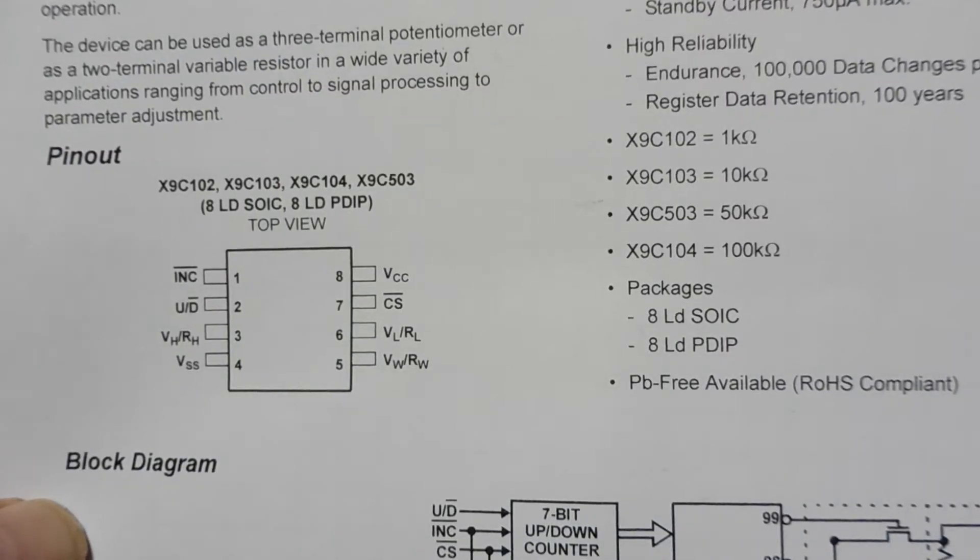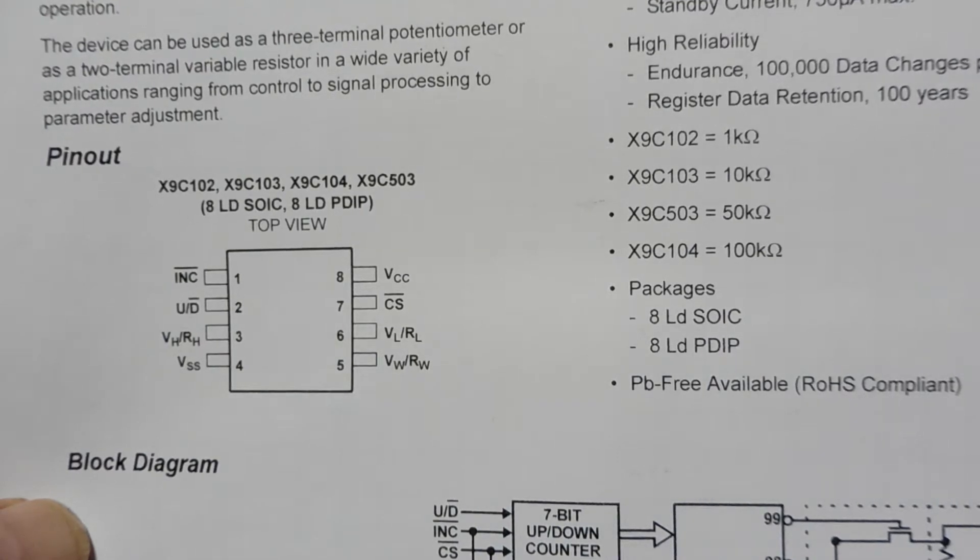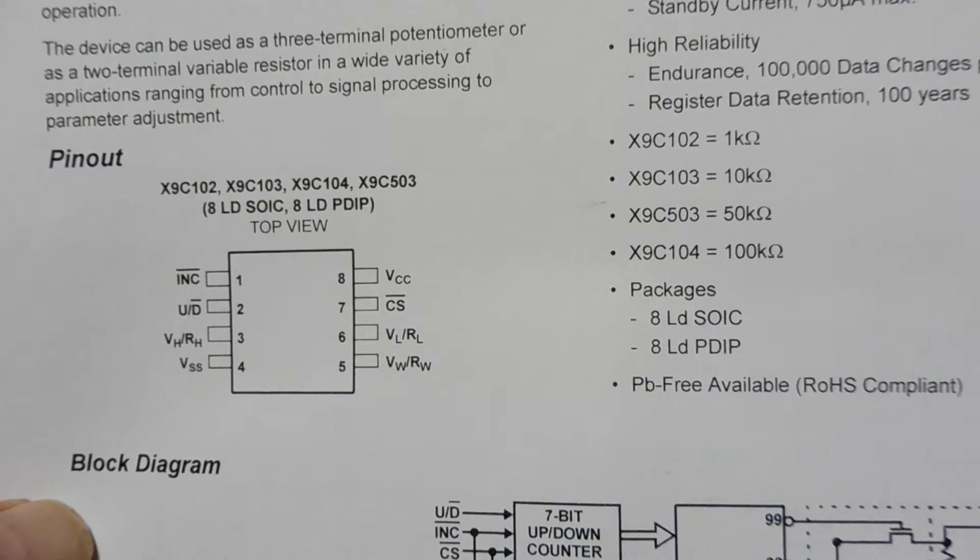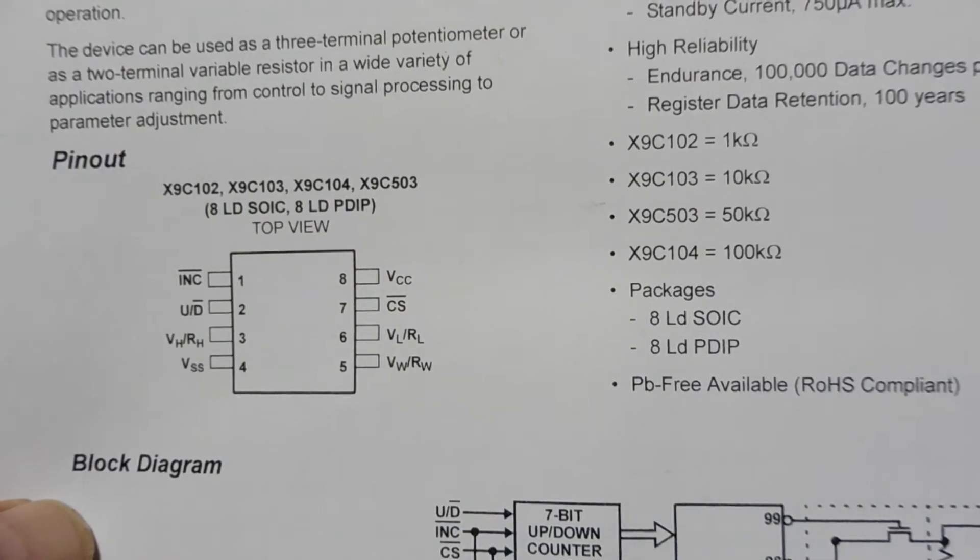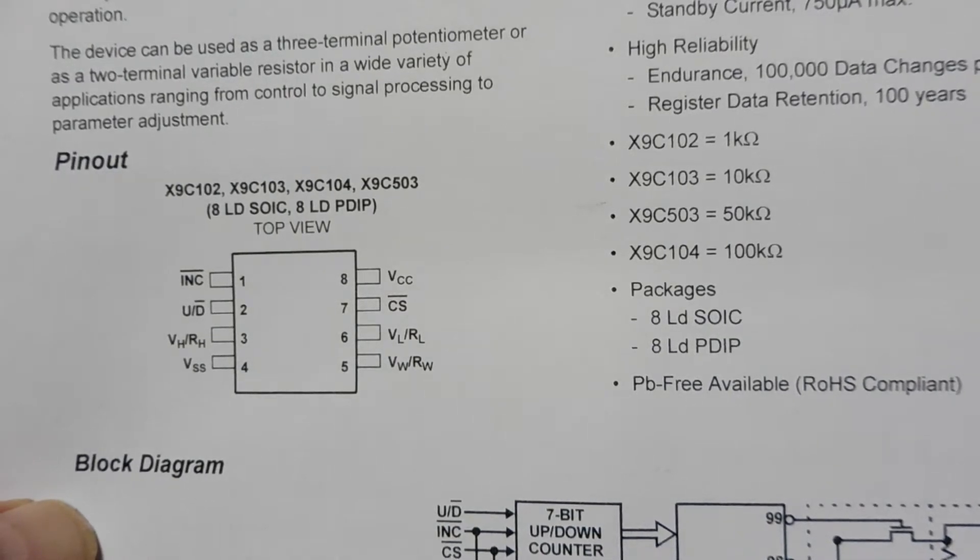In this video, we are going to revisit the DigiPot, the digitally controlled potentiometer, which is a potentiometer on a chip. And the chip we're going to look at is the X9C103, which is a 10K ohm pot. Now the wiper position of this DigiPot is controlled by a microcontroller using a three-wire interface.